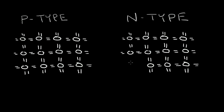Here, I have a lattice of silicon atoms. The circle represents the nucleus of the silicon atom. Recall that each silicon atom has four outer electrons, and this silicon atom will share electrons with the adjacent atom. If I want to take this pure silicon — this intrinsic silicon — and create a P-type material, I can introduce an impurity. When you introduce an impurity, this is called doping.